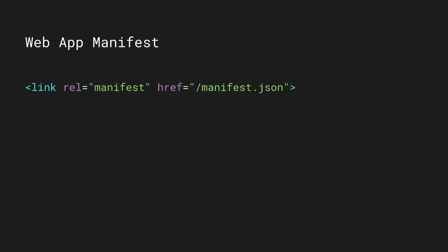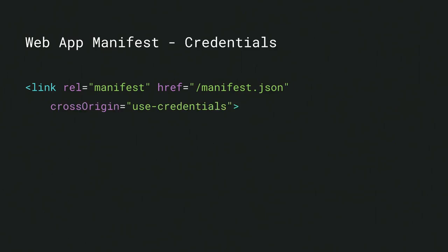We might take a little longer on the web platform to deliver capabilities and integrations. But when we do it, it's done universally. So let's start with the first puzzle piece: the web app manifest. This is a JSON file linked from your page's header element. It provides application metadata that's used for a variety of purposes.